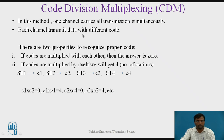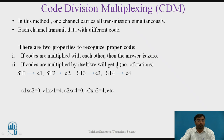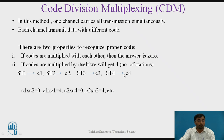Each station transmits data with a different code. There are two properties to recognize the proper code. First, if codes are multiplied with each other, the result is 0. Second, if a code is multiplied by itself, we get N, where N is the number of stations — for example, 4 if there are 4 stations. Assume there are 4 stations with codes C1, C2, C3, and C4. If codes are multiplied with each other, the result is 0; if multiplied by itself, the result is 4.